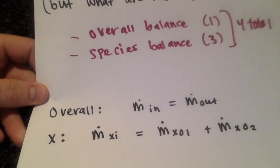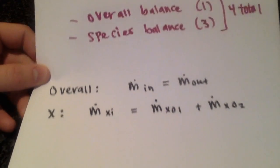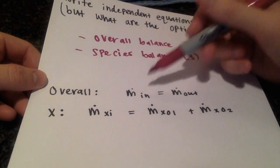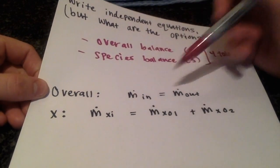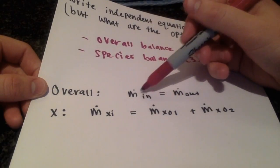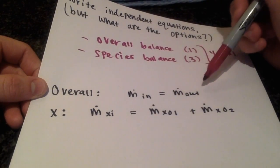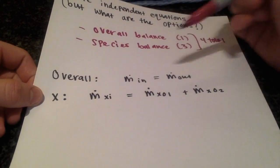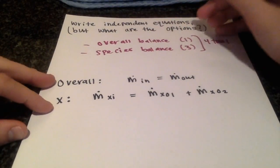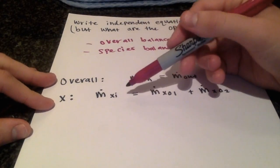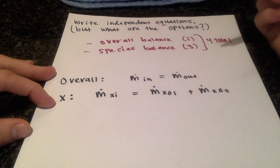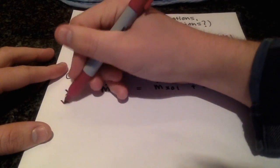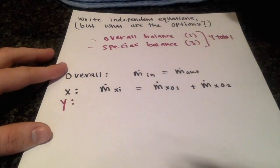There are four different equations we could write, but only three are independent. Let's write these out in equation form. Our overall balance is that mass in equals mass out. Then we can do species balances for X, Y, and Z — the mass flow rate of X going in equals the mass flow rate of X going out in streams one and two — and we can write that for Y and Z as well.